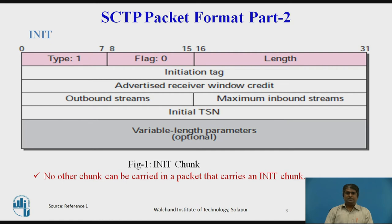The Init Chunk is the first chunk sent by an endpoint to establish an association. The packet that carries this chunk cannot carry any other control or data chunks. The value of the verification tag for this packet is 0, meaning no tag has yet been defined. The format is shown in the figure. The three common fields are type, flag, and length. The value of the type field is 1, the flag field is 0 (no flags), and the length field has a minimum value of 20.